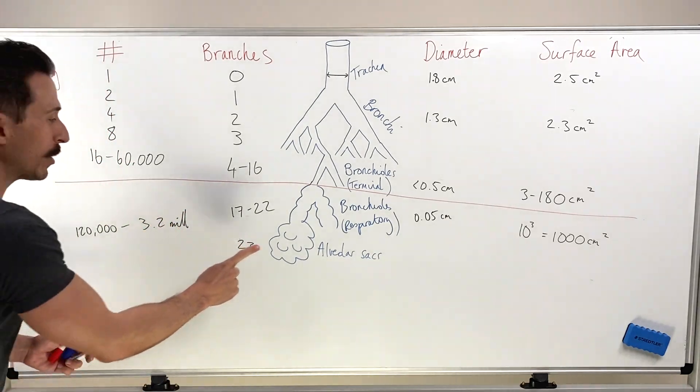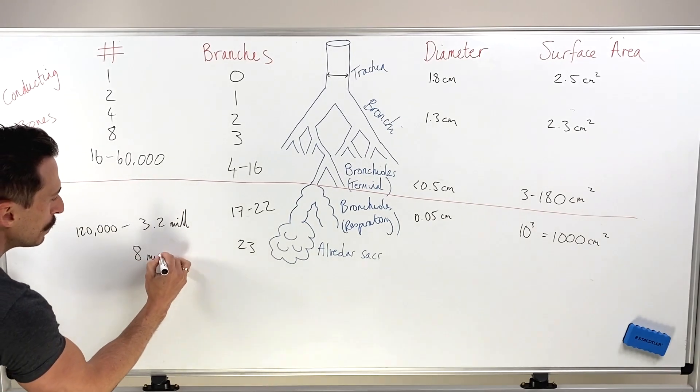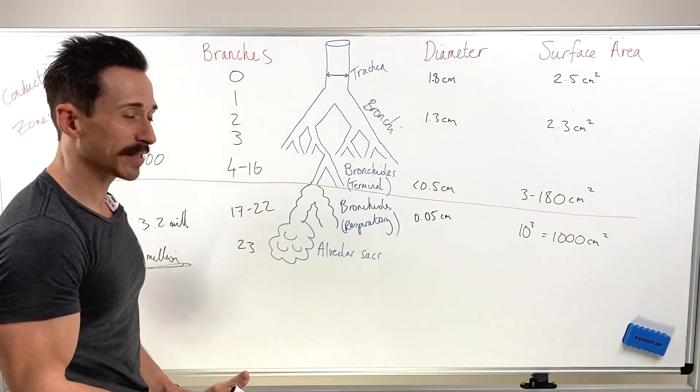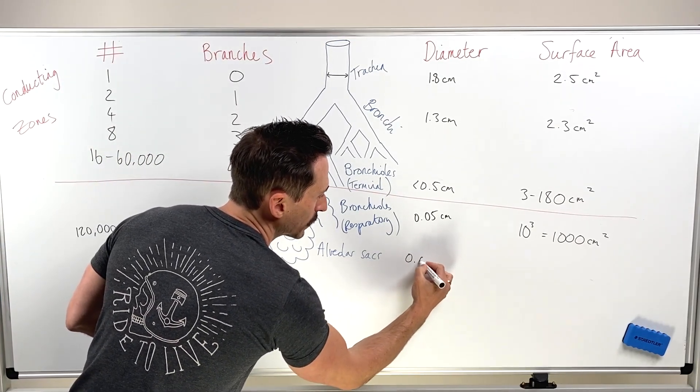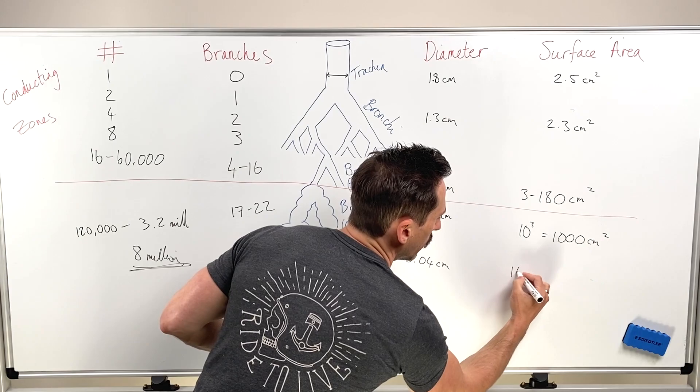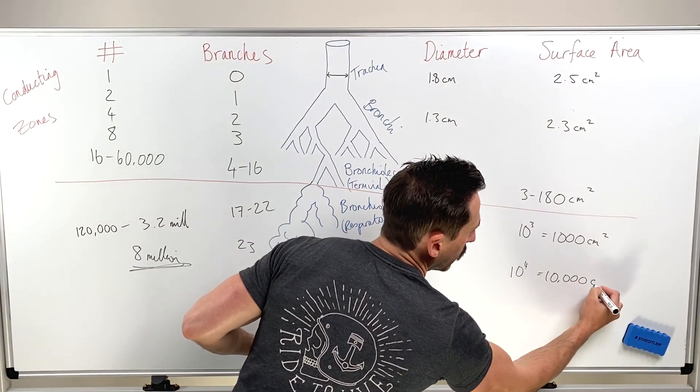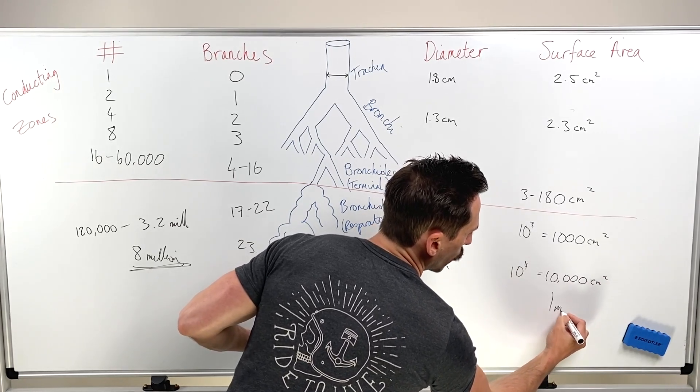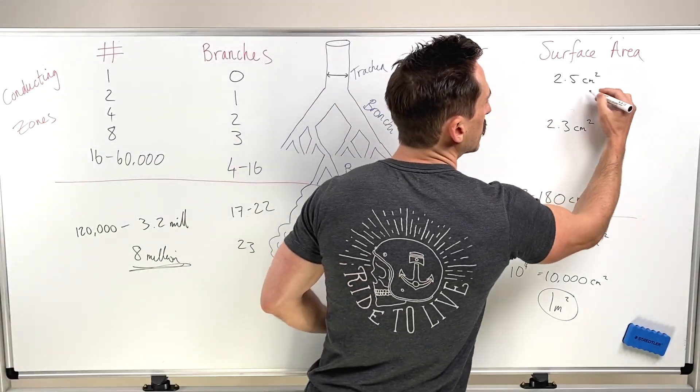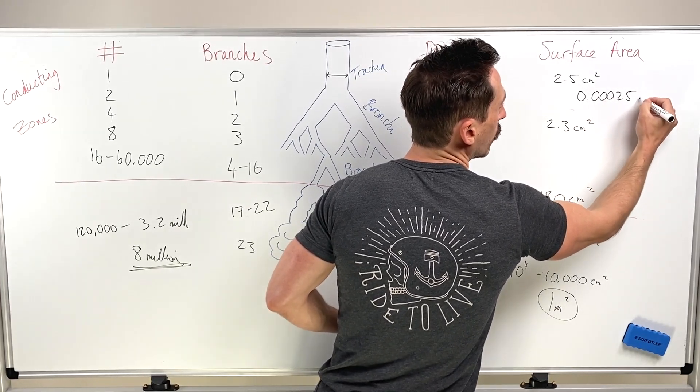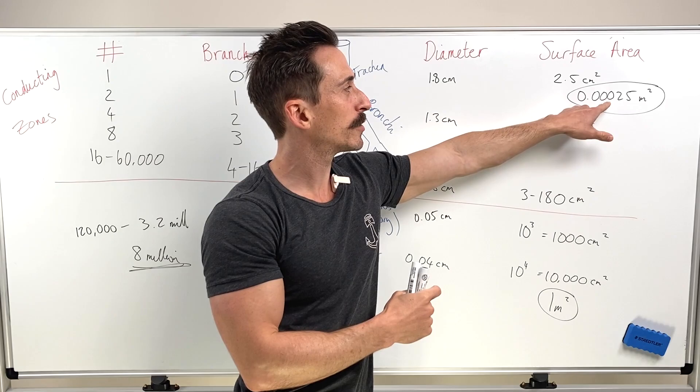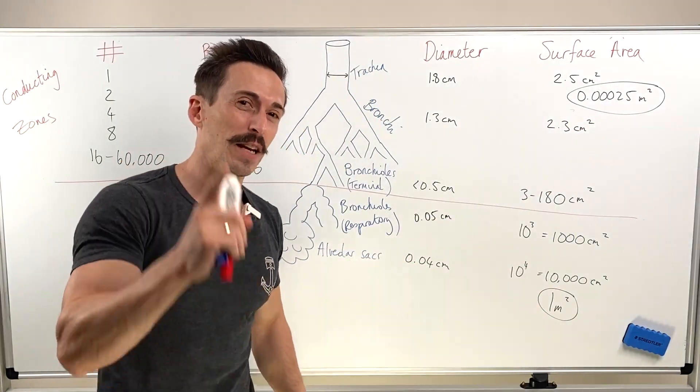But at the end of that, we will end up having generated 8 million alveolar sacs, each containing alveoli, which can exchange gas. Now the diameter of these alveolar sacs is around about 0.04 centimeters. But the surface area is 10 to the 4 centimeters squared, which is 10,000 centimeters squared. That's one square meter. One square meter of surface area generated by these alveolar sacs. Compare that to this. This is 0.00025 square meters. So we've gone from having a surface area at the first pipe of 0.00025 square meters down to one square meter, and we haven't yet finished.